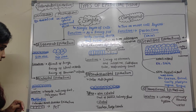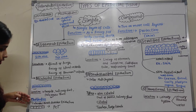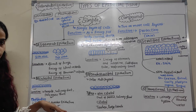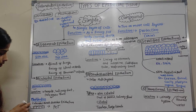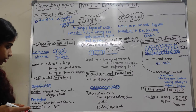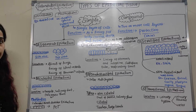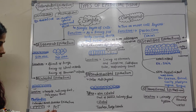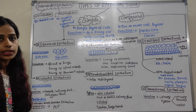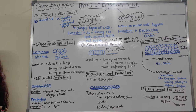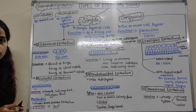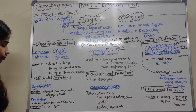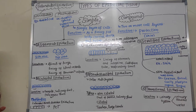A modification of cuboidal epithelium is cuboidal brush border epithelium, where a brush border-like structure is present on the cuboidal cells. The function of cuboidal epithelium is secretion and absorption — if found in a gland it secretes, and if found with cilia it absorbs material.